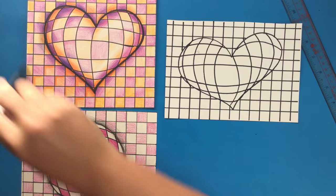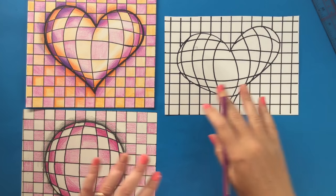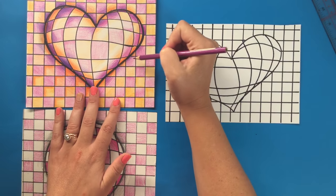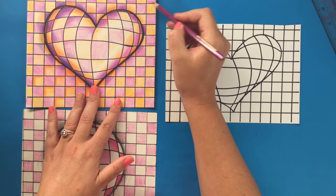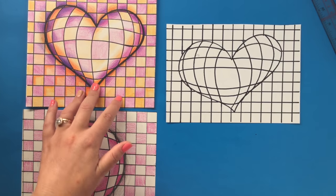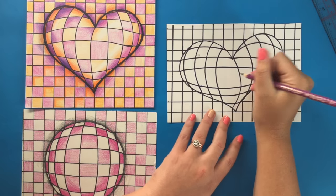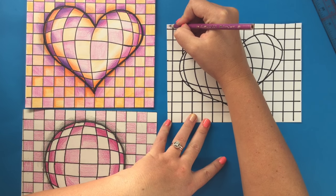And the way that I do this to ensure that I am giving every other square the appropriate color, including when I get inside of my 3D shape, is I start from the corner of my flat grid.